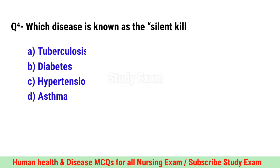Question No. 4. Which disease is known as the silent killer? Correct option is C. Hypertension.